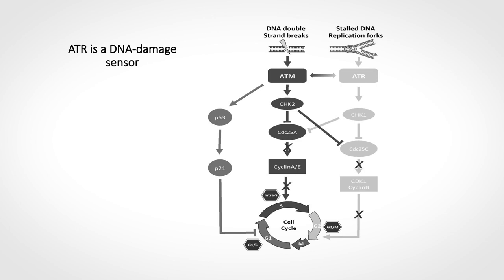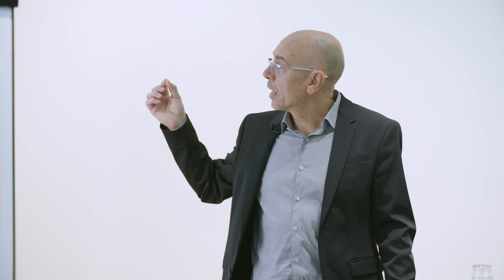ATR encodes a protein kinase — an enzyme that adds phosphate groups to other proteins, thereby regulating signaling pathways in the cell. ATR, in concert with another kinase called ATM, is particularly interesting because it is a sensor of DNA damage in the cell.